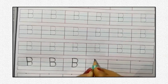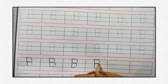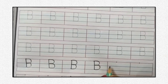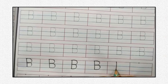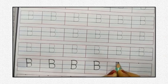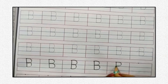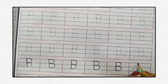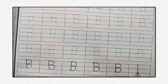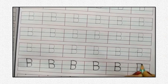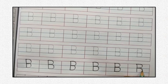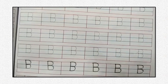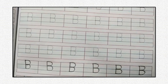Standing line, a backward curve, one more backward curve — B. Standing line, a backward curve — B. Standing line, backward curve, one more backward curve — B. Thank you.